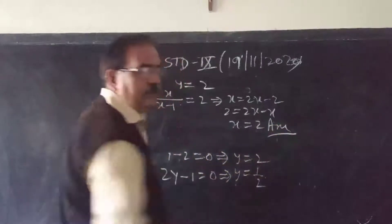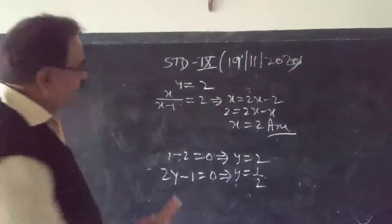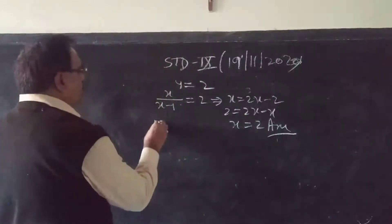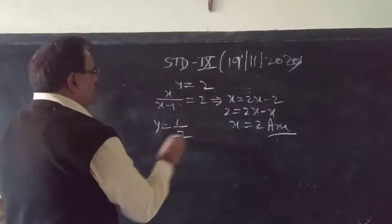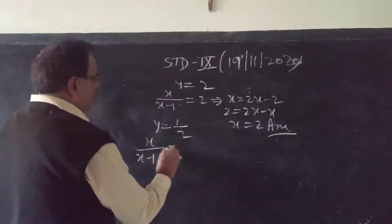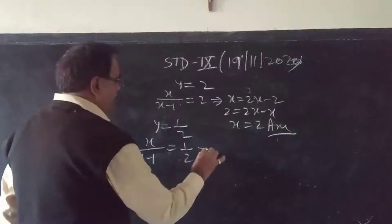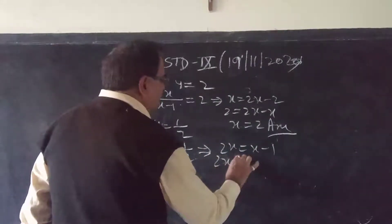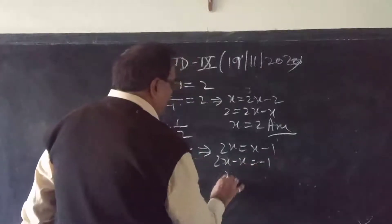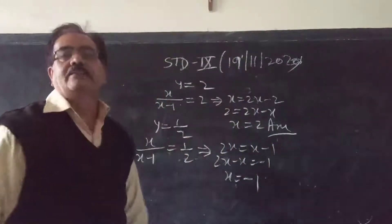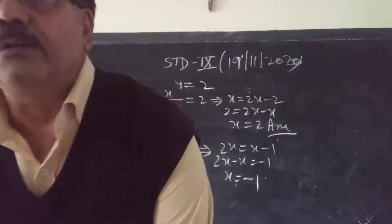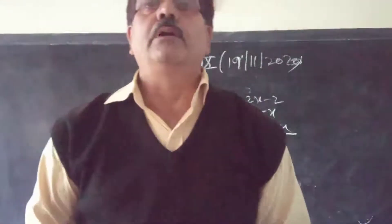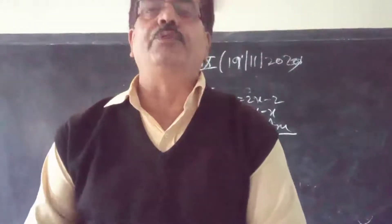So x = 2 is the first solution. For the second case, y = 1/2: x/(x−1) = 1/2, which gives 2x = x − 1, and we can follow through to get the second answer. In your textbook example it is solved by taking the LCM method, but this substitution method is an easier way to solve it.